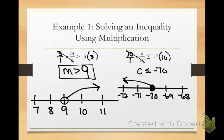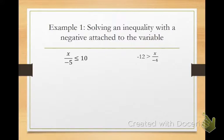And the next example, we just have to add in one detail: negative being attached to the variable. So here we have X over negative 5. We know that our variable can't be negative. So here's what happens. When a negative is attached to our variable and we have to multiply both sides by a negative number, our inequality has to be reversed.